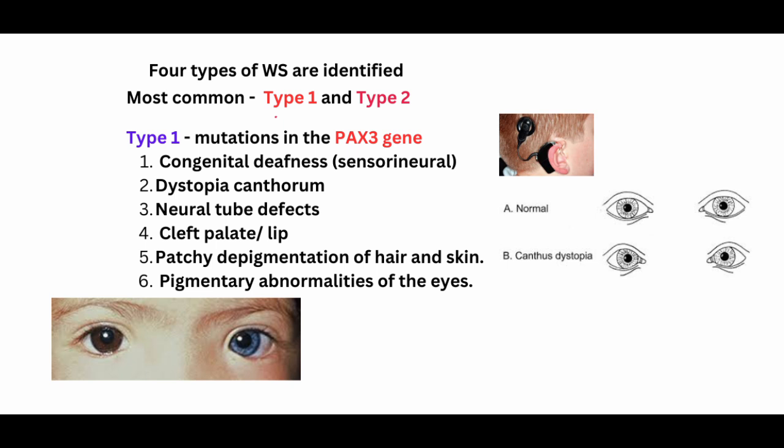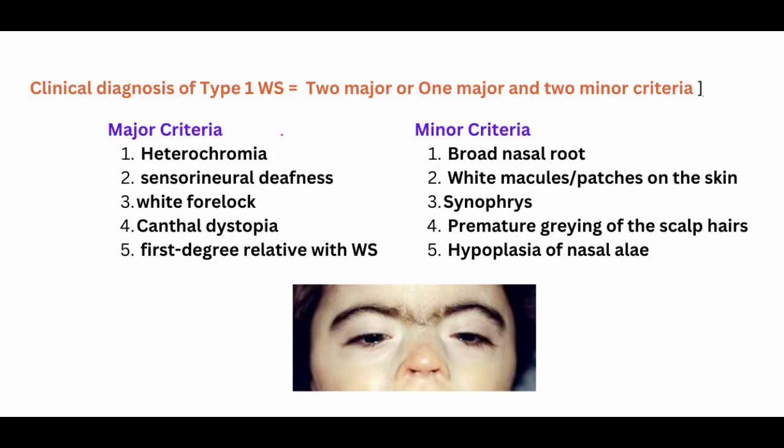Though it is a clinical diagnosis, two criteria are used — major and minor. The major criteria are: heterochromia, sensorineural hearing loss, white forelock, lateral displacement of the inner canthus of the eye, and presence of a first-degree relative with Waardenburg syndrome. The minor criteria are: broad nasal root, white macules on the skin, synophrys (meeting of the medial ends of eyebrows in the midline), premature graying of scalp hair, and hypoplasia of the nasal ala.